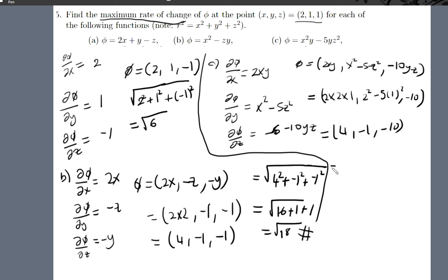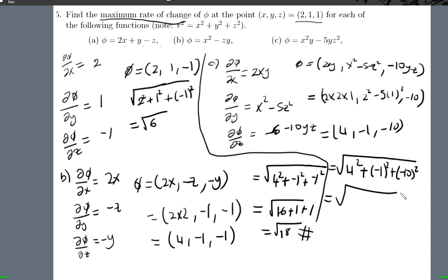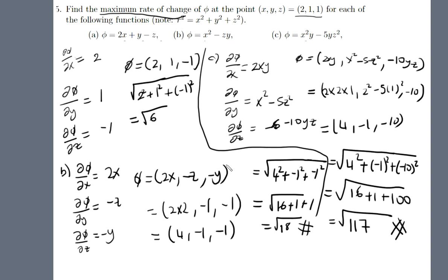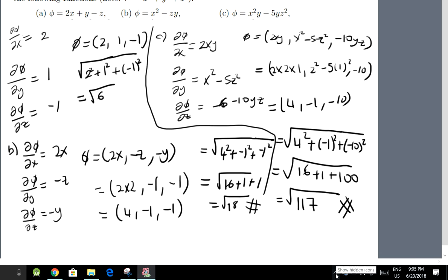Now we can find the maximum rate of change as four squared plus minus one squared plus minus ten squared. This is 16 plus one plus 100, therefore the maximum rate of change is the square root of 117. That's your final answer. That's all for today — hopefully you understood something, thank you.